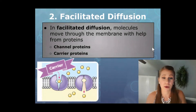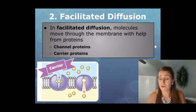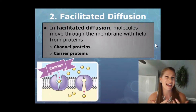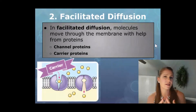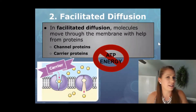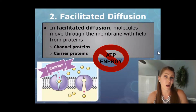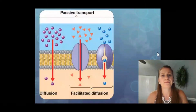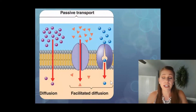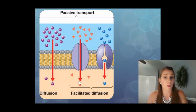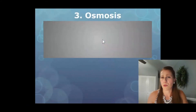The second type is a carrier protein — still no ATP energy being used. That is the most confusing part for a lot of students. They think that because something is moving, something has to be using energy, and that's just not the case here. No ATP energy is being used. Facilitated diffusion is basically just diffusion with a protein helper. We've got a channel protein going straight through the middle of the cell membrane, and on the other side, a carrier protein is used for facilitated diffusion.